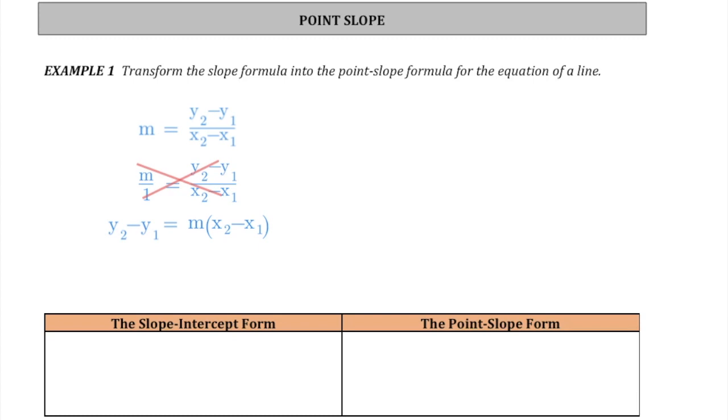This is called the point-slope formula because you only need to know the coordinates of one point and the slope to get the equation of a line. But here I have two sets of coordinates: y1, x1, x2, y2. So I'm going to get rid of the x2 and the y2, replacing them just by plain x, plain y. And now I have a formula that only depends on knowing the slope and the coordinates of one point. This is the point-slope formula.